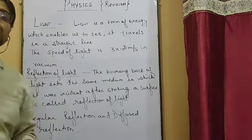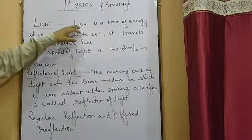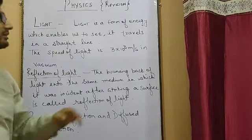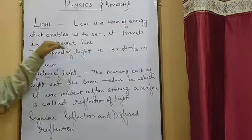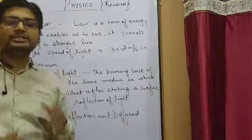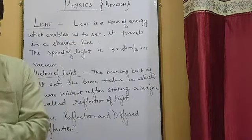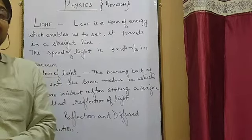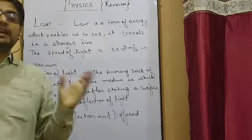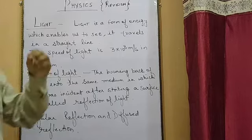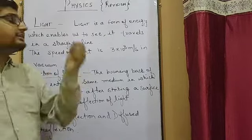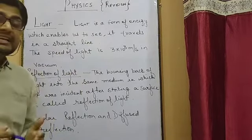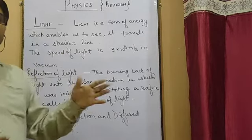First of all we should know what is light energy. Light is a form of energy which enables us to see, and because of light energy we can see the objects around us. Light travels in a straight line, which is known as rectilinear propagation of light — a property of light due to which it travels in a straight line.